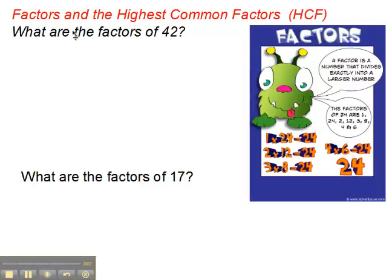Now let's look at the idea of factors, and the related idea of the highest common factor, sometimes abbreviated as the HCF. So what do we mean by the factors of 42? A factor is a number that divides exactly into a larger number. So what numbers divide exactly, or a whole number of times, into 42?